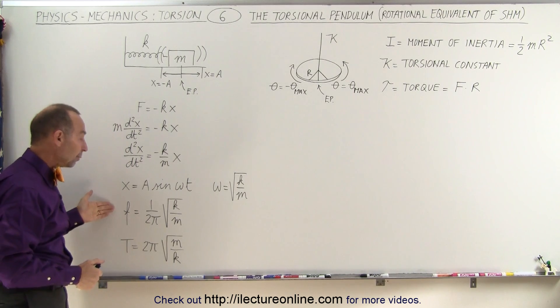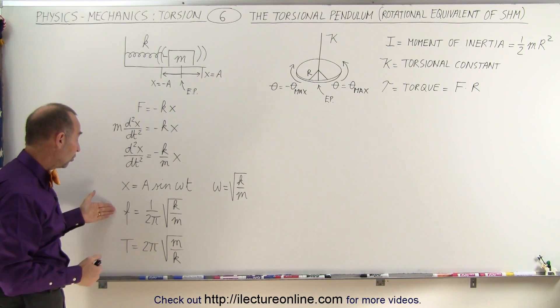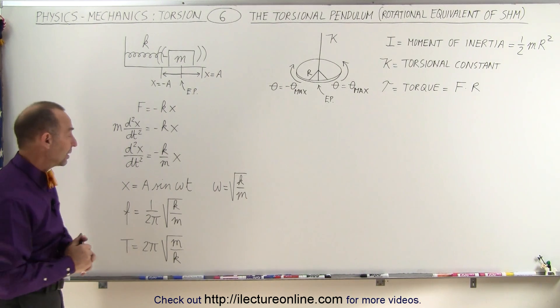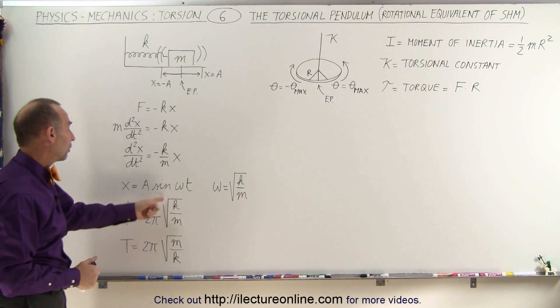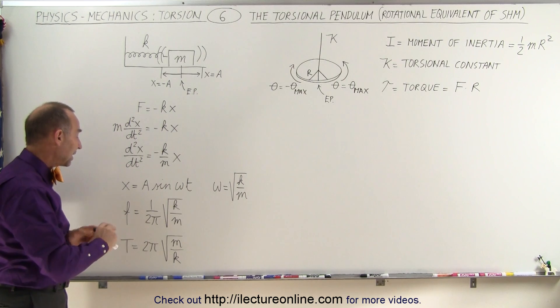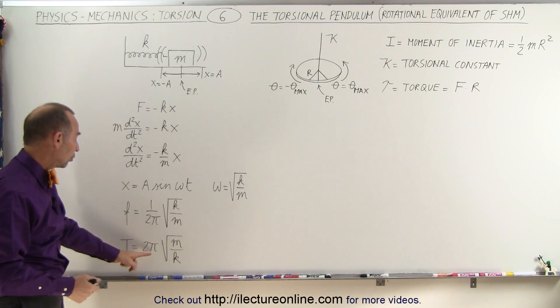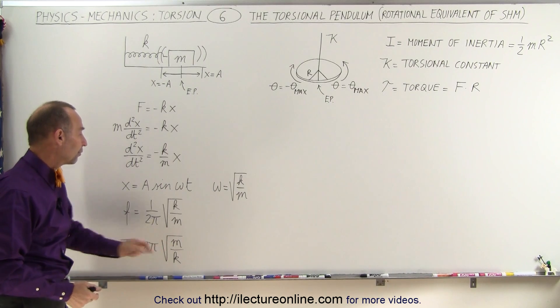We could then write the frequency of oscillation as such, which is 1 over 2 pi times omega. Omega, of course, is the angular frequency, which then becomes the square root of k over m. And if we then take the inverse of that, the period, which is 1 over f, that is equal to 2 pi times the square root of m over k.